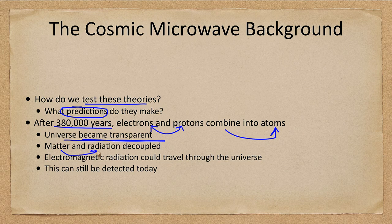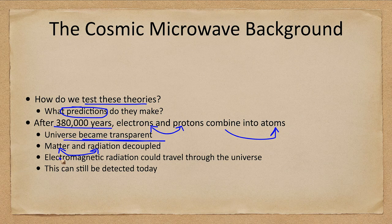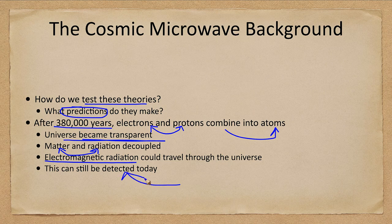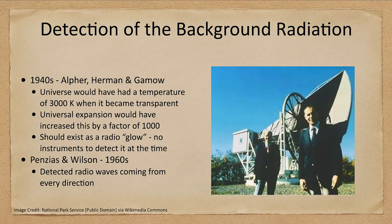Matter and energy are no longer coupled together—they are now separate, and the universe becomes transparent. Now the electromagnetic radiation can travel through the universe. This can still be detected today. In fact, it was detected back in the 1960s.